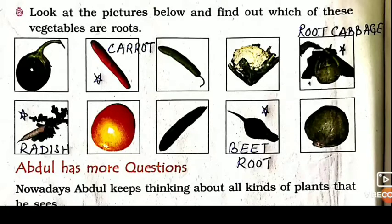Beetroot is also used — we use it in the salad. And what do we find in our body from it? Blood. So, you have to write these names. Write in your textbook only — write the names.